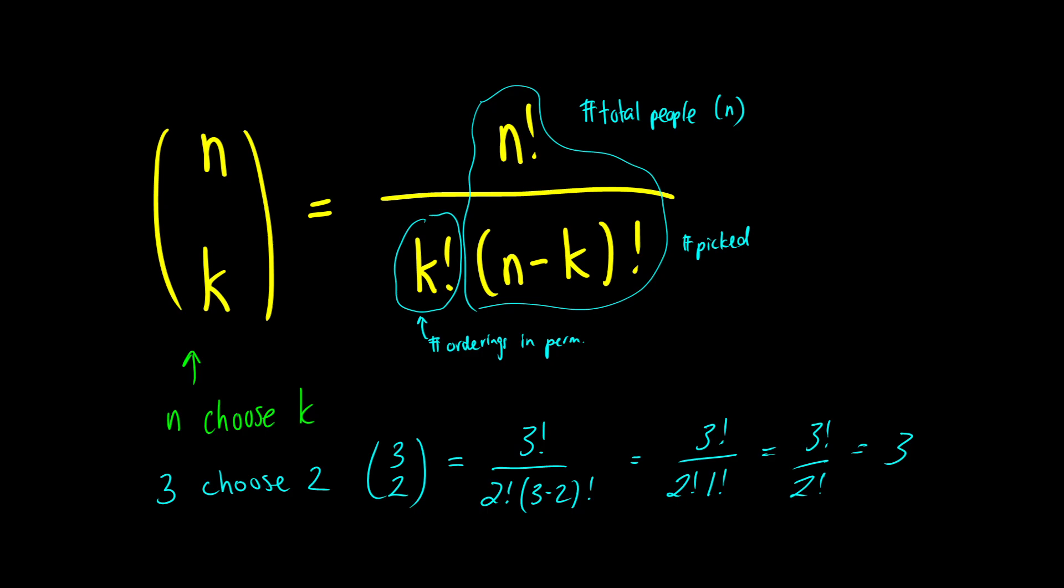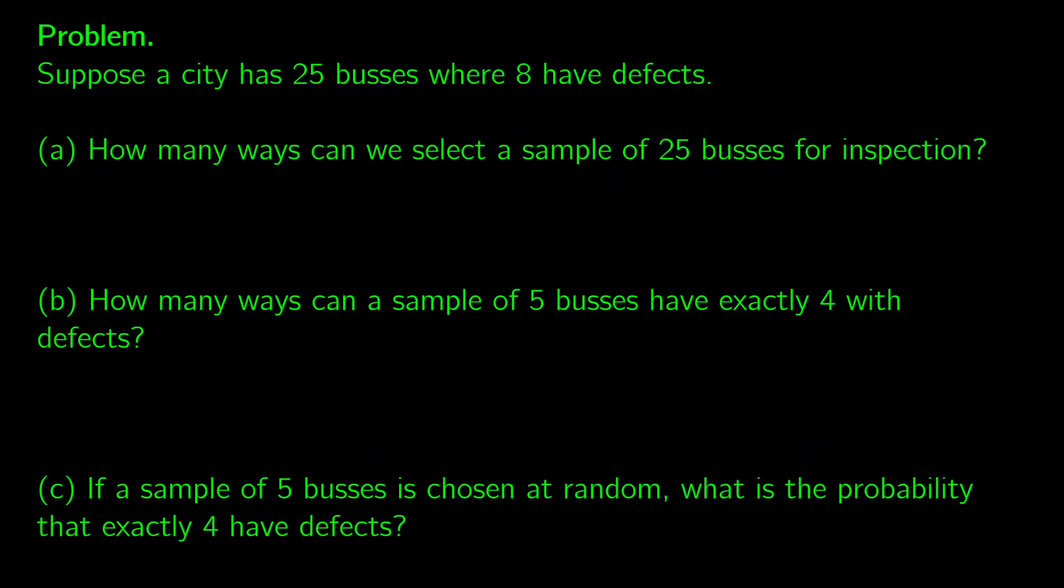So let's see this in action with another problem. So suppose a city has 25 buses and eight of them have defects. So how many ways could we select a sample of, let's say, of five of 25 buses for inspection? So there's 25 buses total. I want to select a sample of five of them.